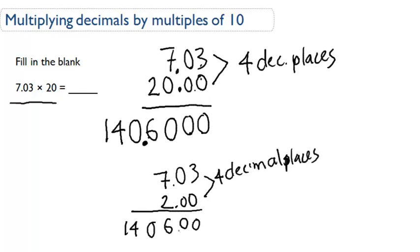So 4 decimal places would give me 14.06, and since this is a 10, this is a multiple of 10, 20 is equal to 2 times 10. So now I'm going to multiply this by 10. To do that, I move the decimal place over one place, and that gives me my final answer would be 140.6.